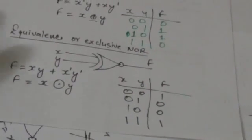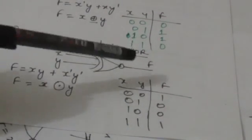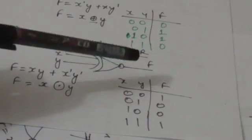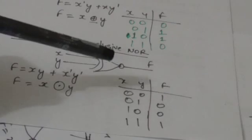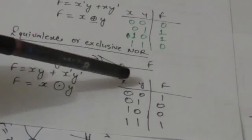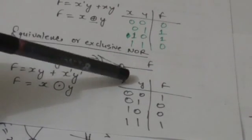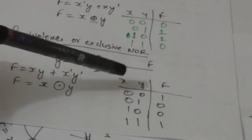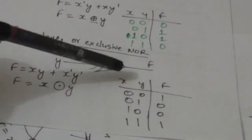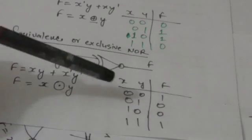Now let us see the truth table for the equivalence function. The value of the equivalence function F will be 1 if the variables X and Y both have value 0 or both have value 1 — that is, when the inputs are equal.